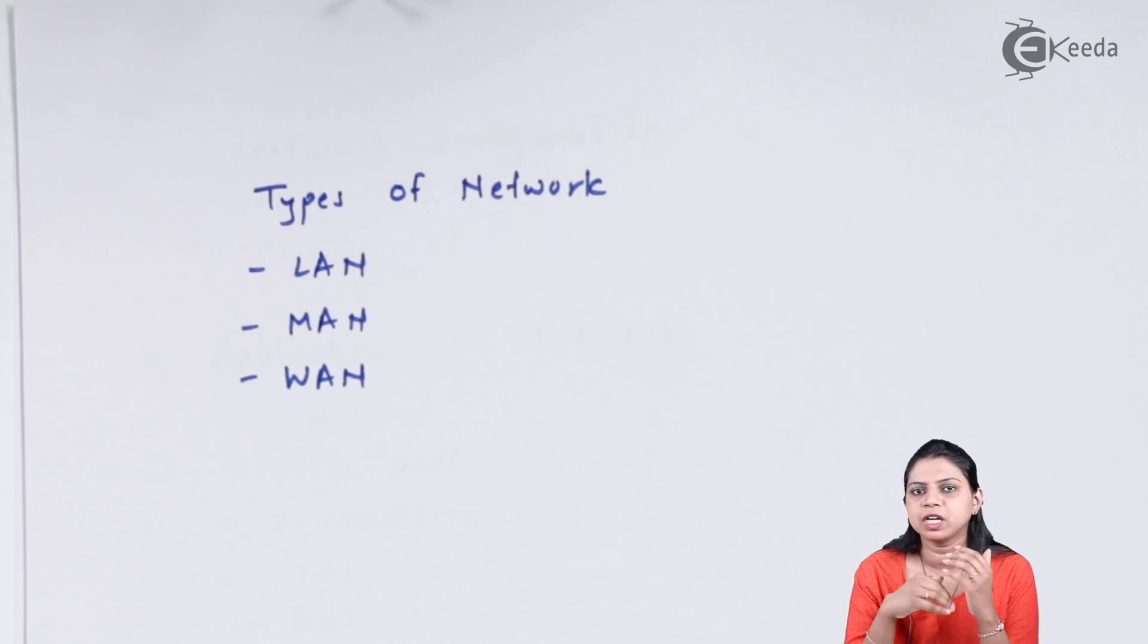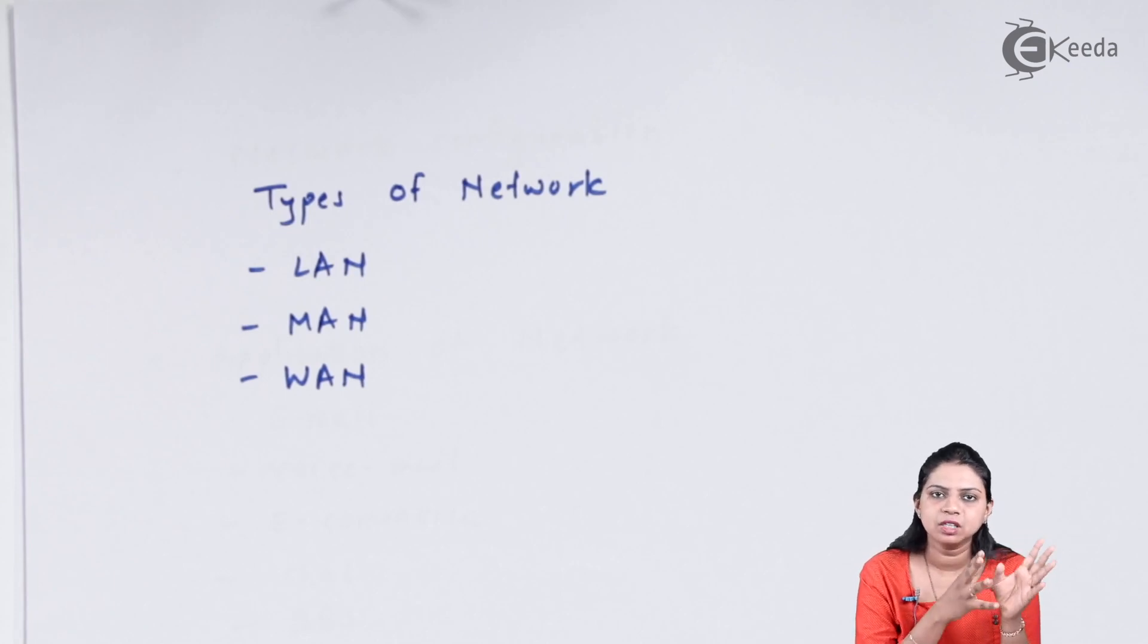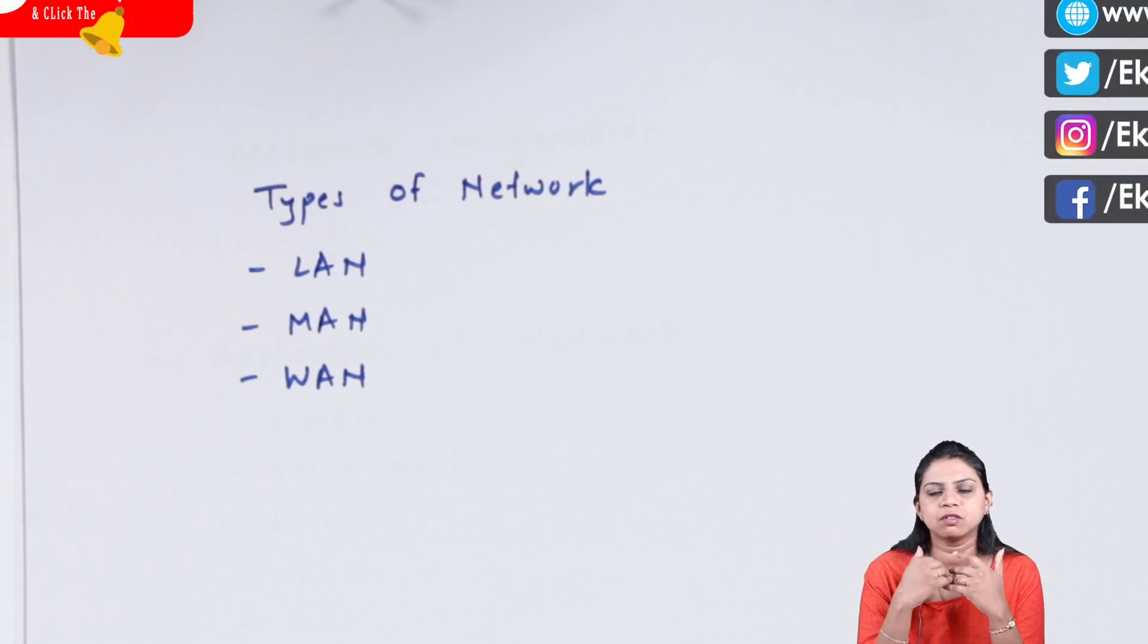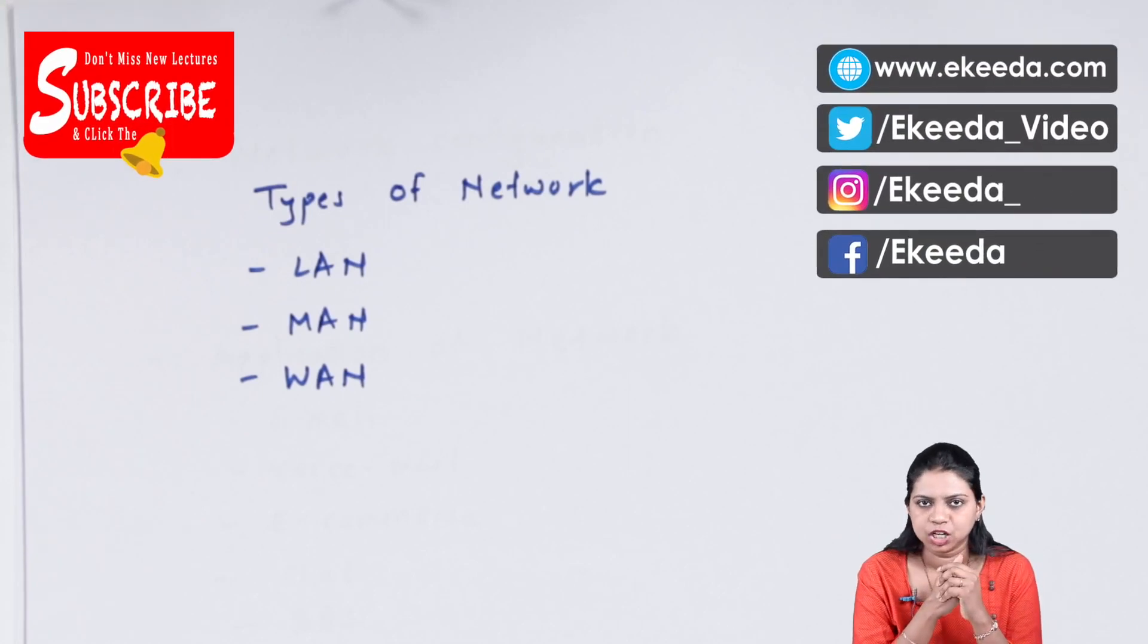So these are three important types of networks: LAN, MAN, and WAN. In LAN, the geographical area covered is very limited - only within a small campus or building. In MAN, you can cover a city. In WAN, you can cover the entire world for communication. Thanks for watching this video. In the next video, we will study types of network configuration.